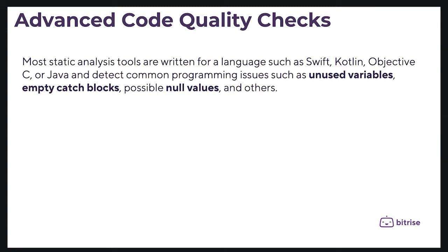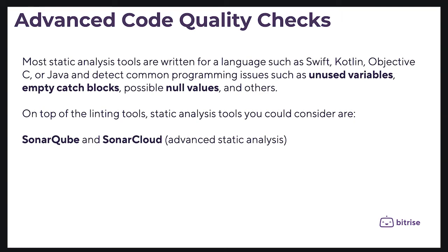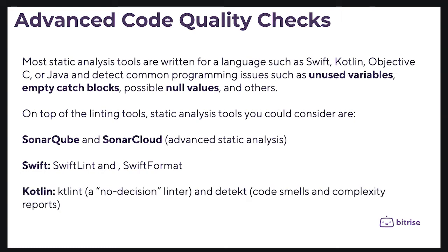On top of the linting tools, static analysis tools you could consider are SonarQube and SonarCloud. This advanced static analysis tool for Swift — you can use SwiftLint and SwiftFormat. For Kotlin, you can use Ktlint and Detekt, which detects code smells and generates complexity reports.